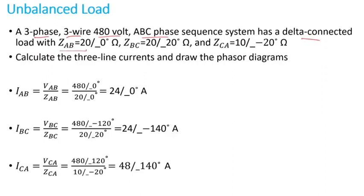Here's Z_AB: 20 ohms with an angle of zero degrees. Z_BC is 20 ohms with an angle of 20 degrees, and Z_CA is 10 ohms with an angle of minus 20 degrees.